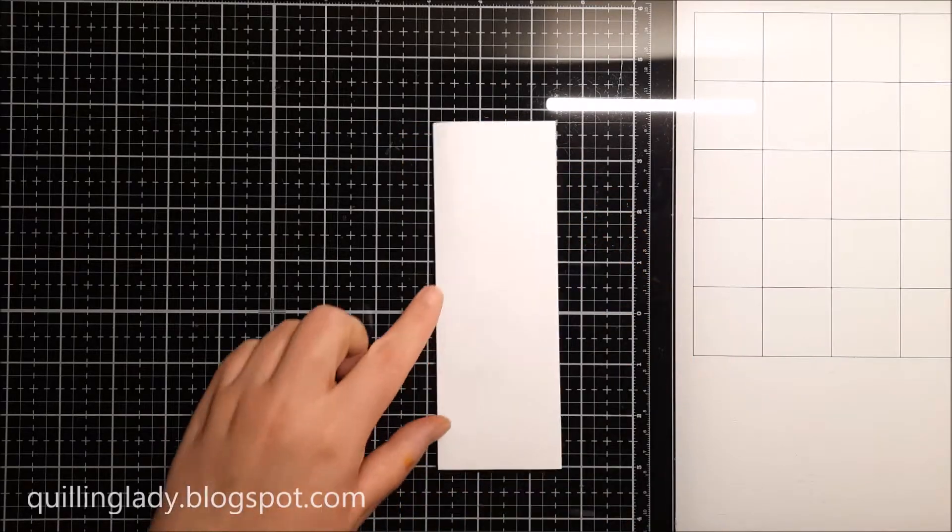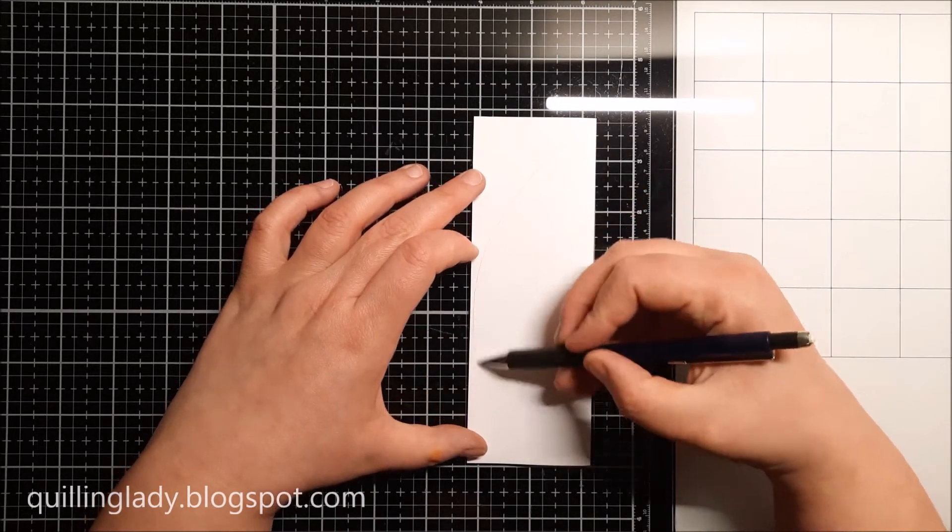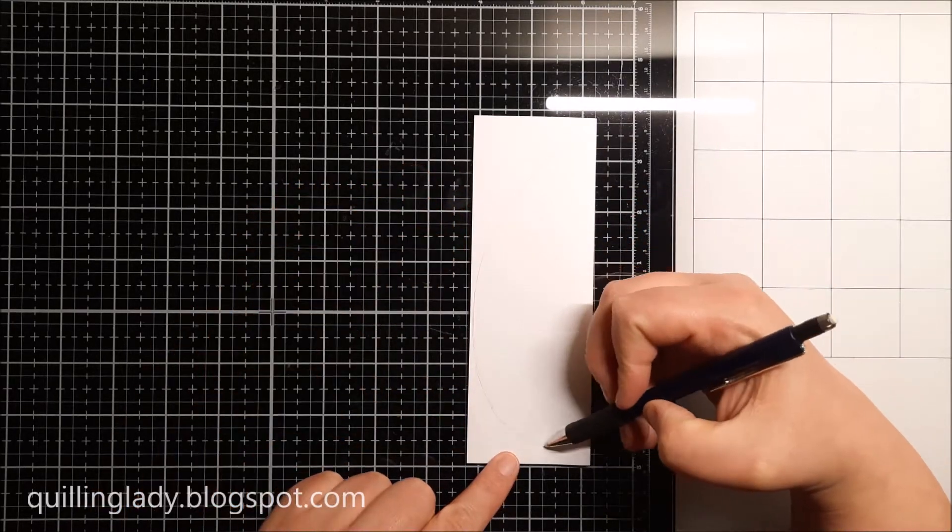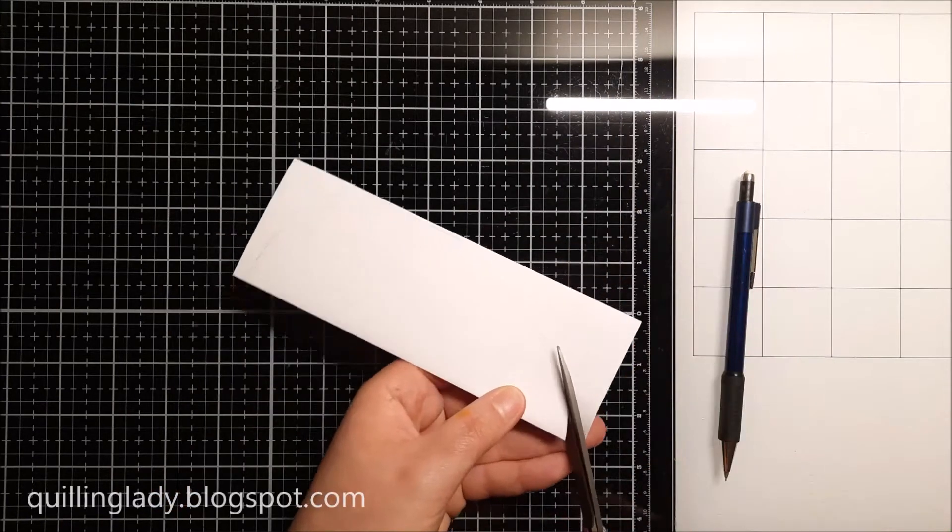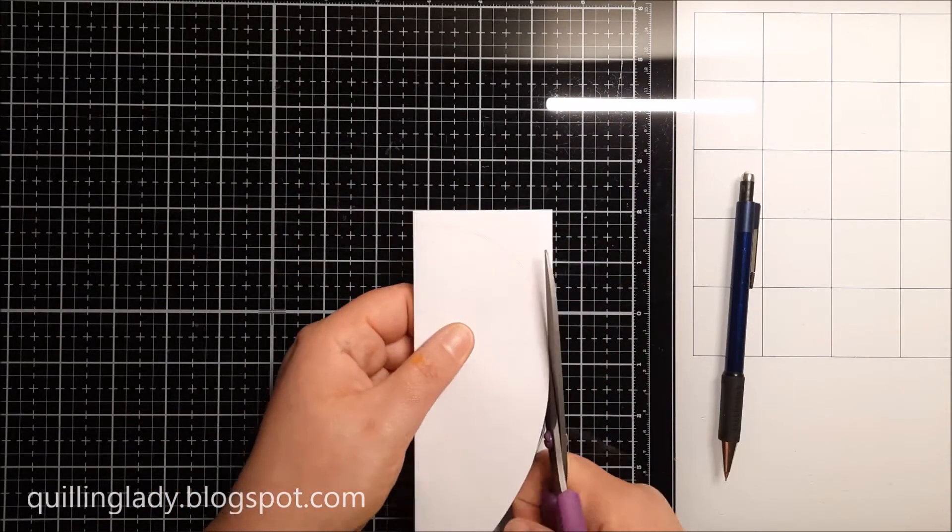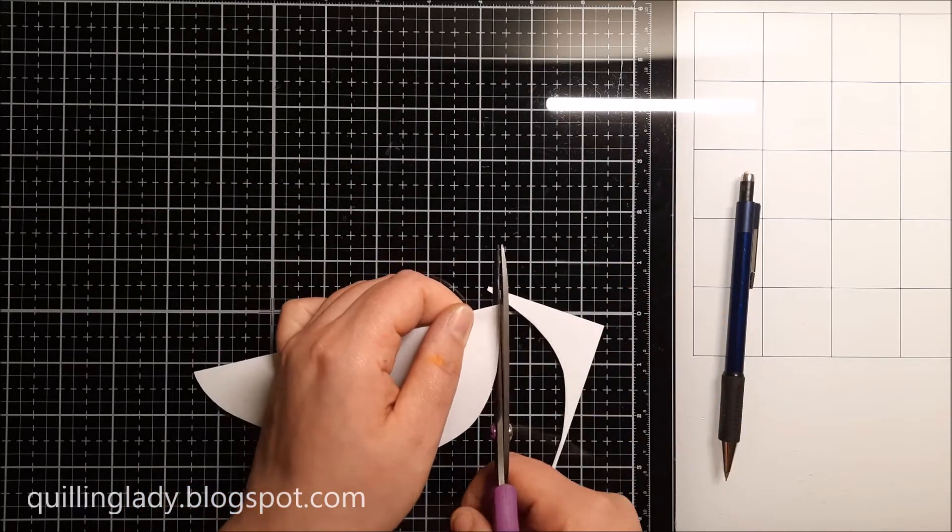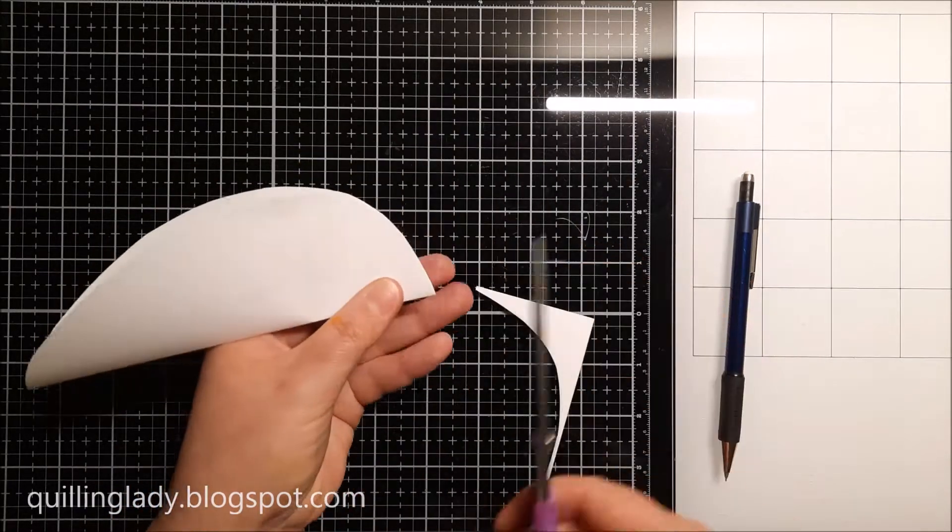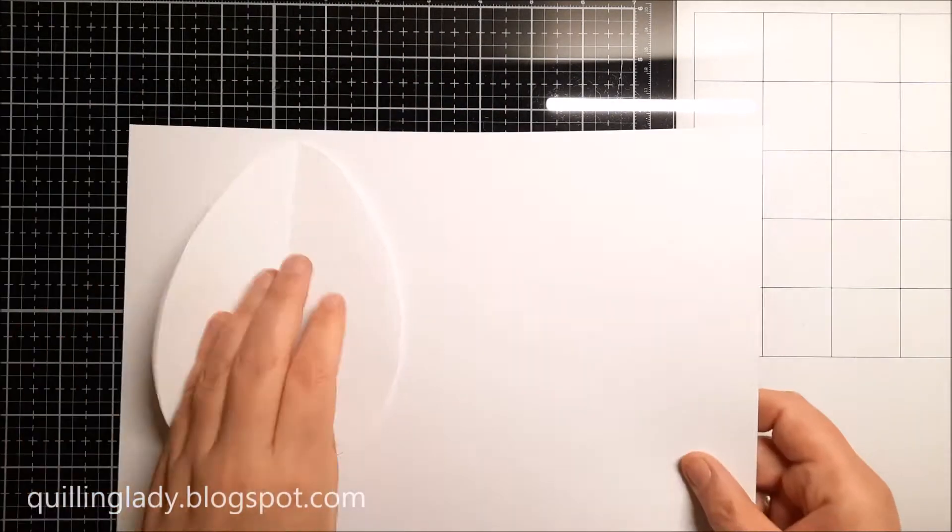Using my pencil, I'm going to create a template in the shape of an egg, and this way we can create an Easter card in the shape of an egg. The reason I chose 12 by 17 centimeters for my template is because I want this card to fit in a 5 by 7 inch envelope.